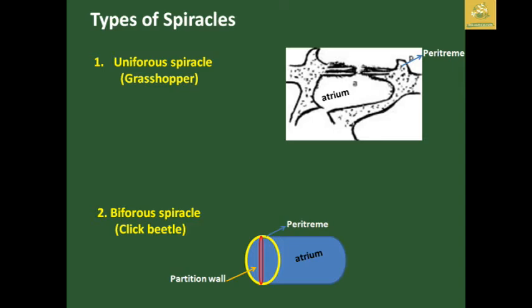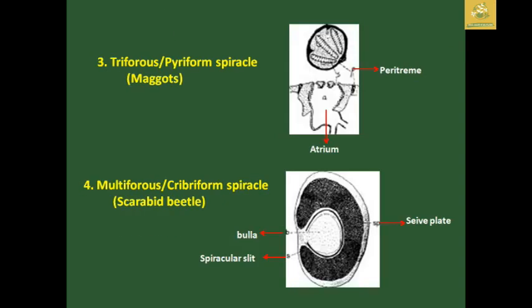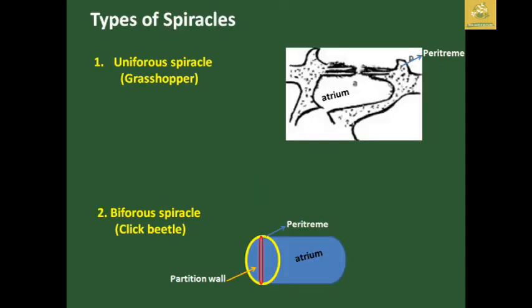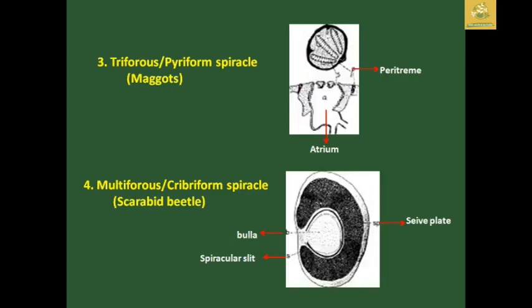Regarding the types of spiracles: the uniform spiracle is present in grasshoppers. In click beetles, there is a bifore spiracle with a partition wall between the spiracle termed the peritreme. The trifore or pyriform spiracle uses the peritreme as a regulatory organ and classifies the spiracle into three. The multifore or cribriform spiracle, found in carabid beetles, has sieve plates, a spiracle slit, and a palma — the round covered region present in the spiracle.